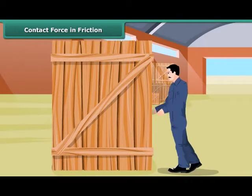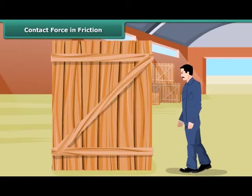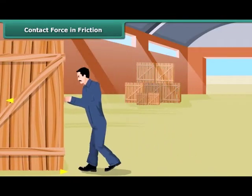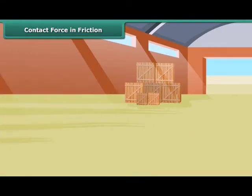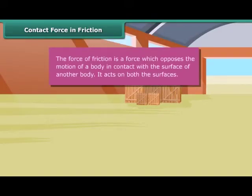The force from friction is more than the push force being exerted by the man. The box will move only when a greater force than the force from friction is applied. Once the box starts sliding, you may find it easier to move the box already in motion. This proves that friction depends on the amount of contact force pushing the two surfaces together. The force of friction is a force which opposes the motion of a body in contact with the surface of another body, and it acts on both surfaces.